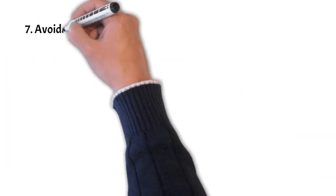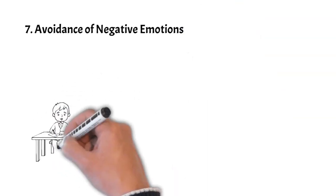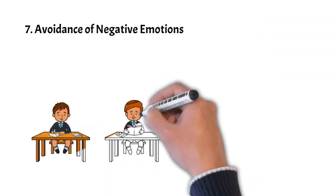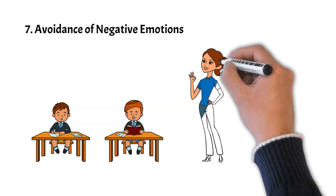Number seven, avoidance of negative emotions. Type 2s might avoid or suppress negative feelings, which can lead to them being inauthentic or dishonest about how they truly feel.